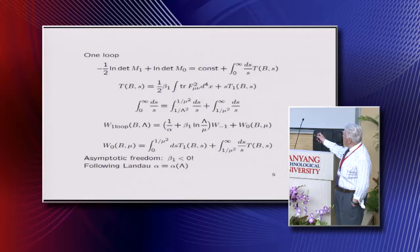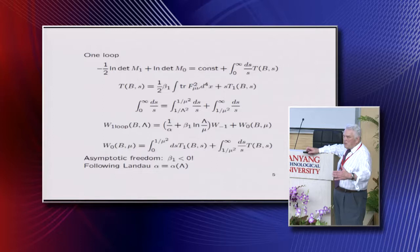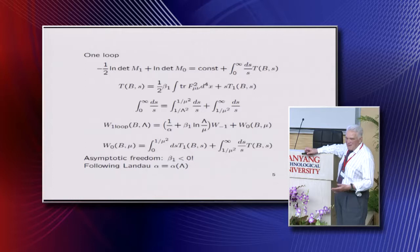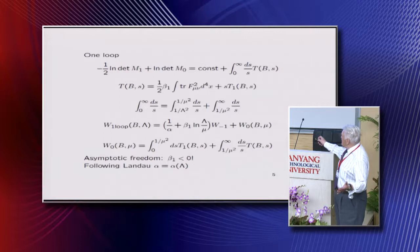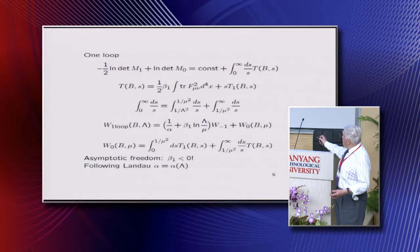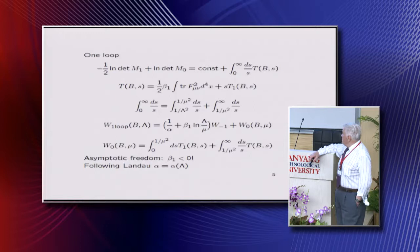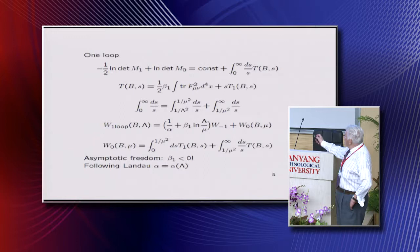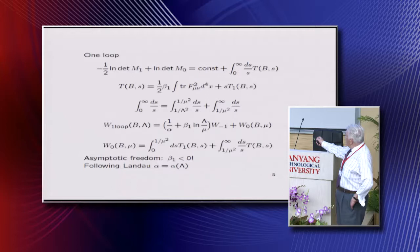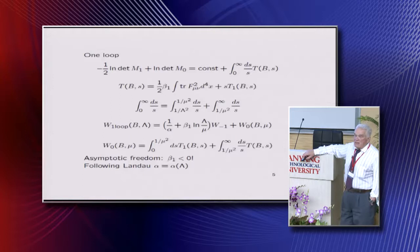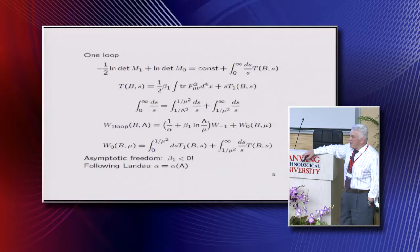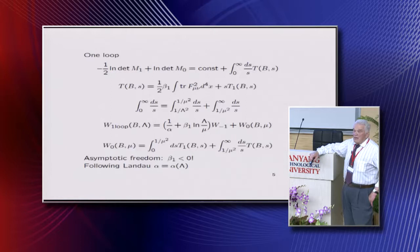And so if you regularize this divergence, integrate from one over lambda squared to one over mu squared, then you'll get full contribution of classical and one loop as one over alpha plus beta_1 times log of lambda over mu. So lambda is regularization parameter. Mu is just normalization parameter. You cannot write logarithm of dimensional things without dividing by something. So mu is just an auxiliary parameter. And then you'll get correction which is finite for lambda equal to infinity, depending on mu of course.